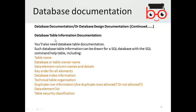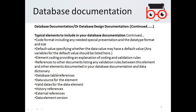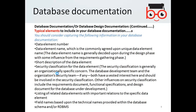Database table documentation is also needed. A table should have a table name, owner name, data element column names and details, key order for all elements, database index information, technical table organization, duplicate row information (whether duplicate rows are allowed), data element list, and table security classification.